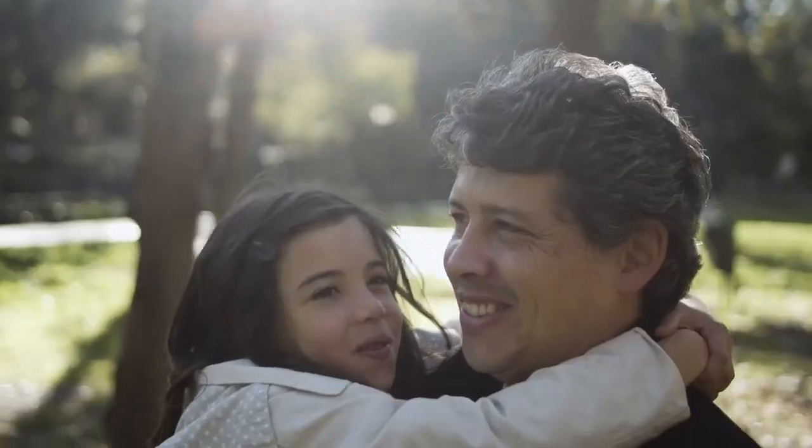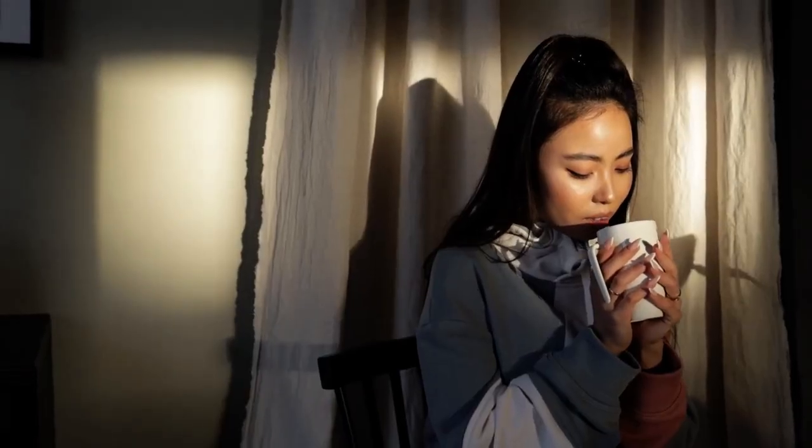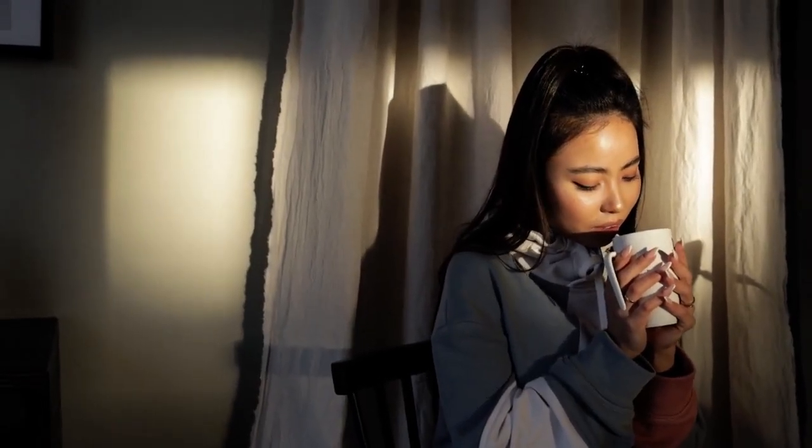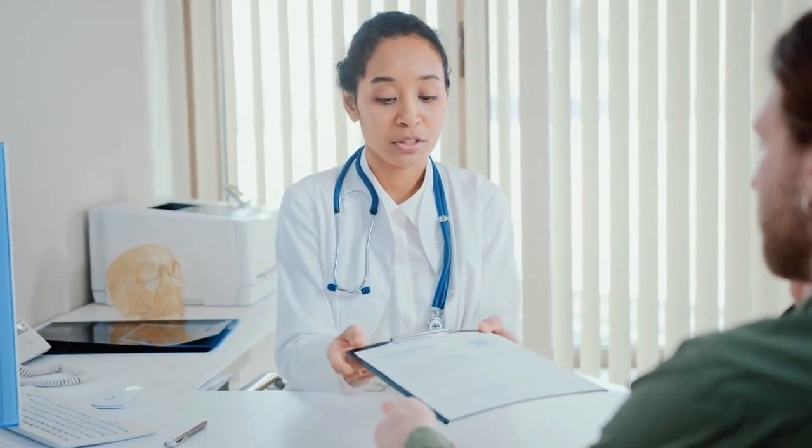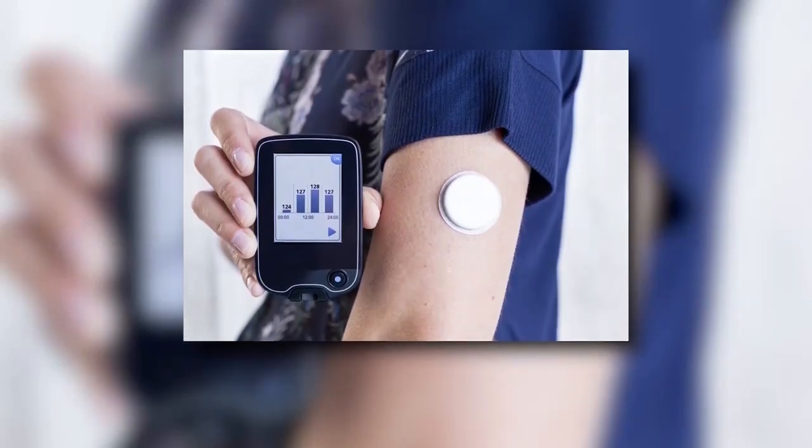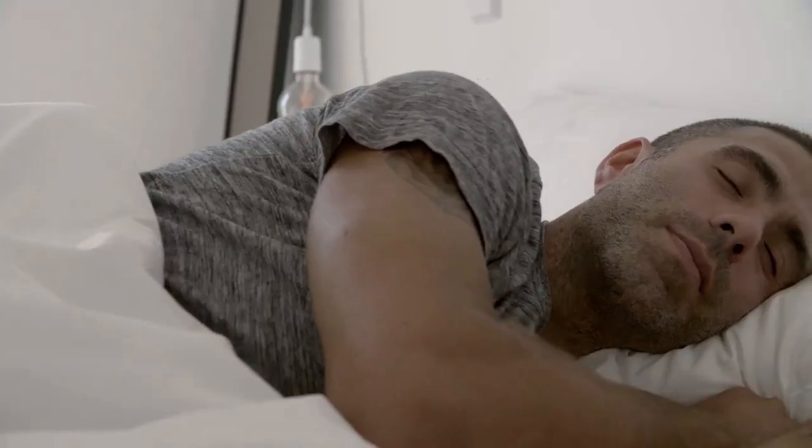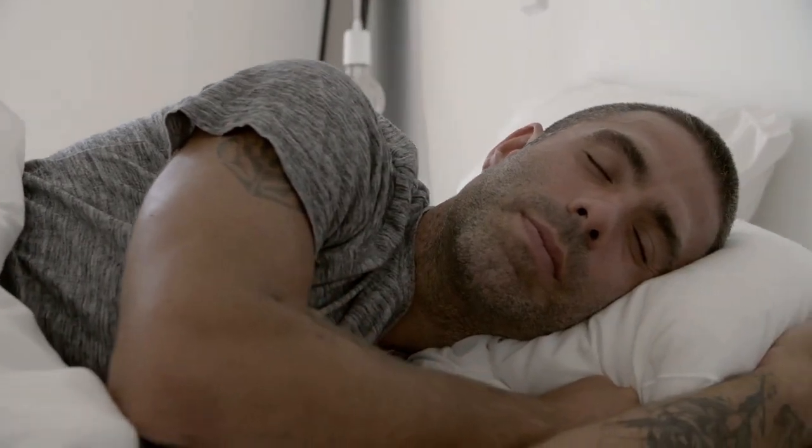But how do you know if what you're doing is working? Beyond just feeling good, can you track this stuff? That brings us to monitoring. You can't really manage what you don't measure. Flying blind isn't ideal. And while your annual checkup is important, it's just a snapshot. Continuous glucose monitors, CGMs, are becoming more accessible. They show you minute by minute how food, exercise, stress, sleep affect your blood sugar, a really key metabolic indicator.